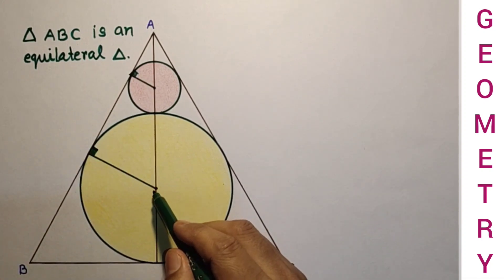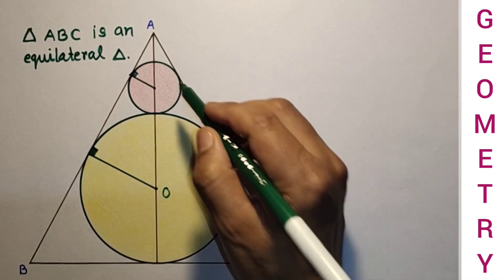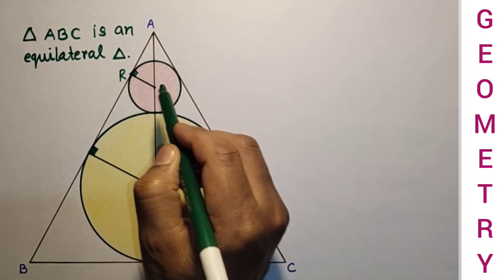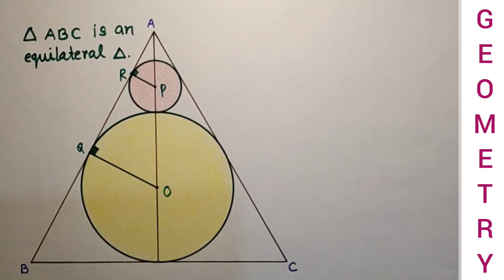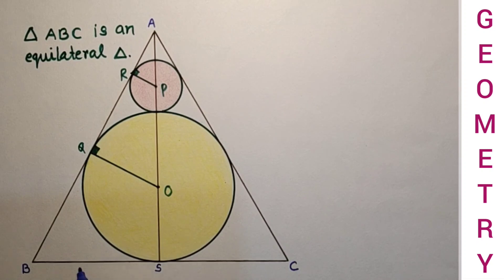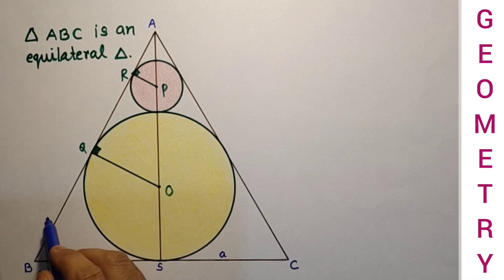Let us name the center of the larger circle as O and the smaller circle's center as P. This point of contact is R and this is Q. Let us suppose this point is S. If we assume the side of the equilateral triangle to be A, then BS is A, SC is A, and BQ and the corresponding segment are also A.